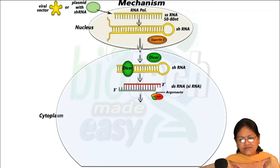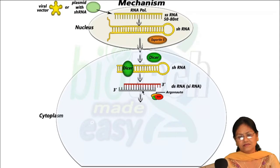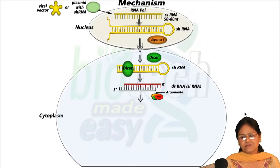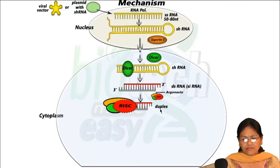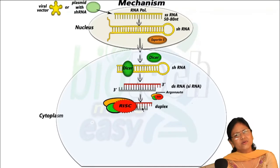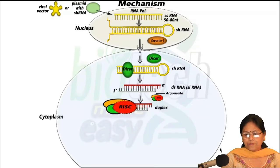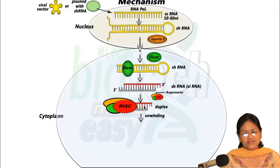The next step involves RISC — RNA-induced silencing complex — which contains the argonaute protein, a very important protein here. RISC is loaded upon this double-stranded RNA or siRNA duplex. From here onwards, the process is similar to siRNA. If you have gone through the video on siRNA, you will understand this very easily.